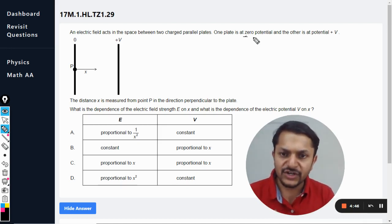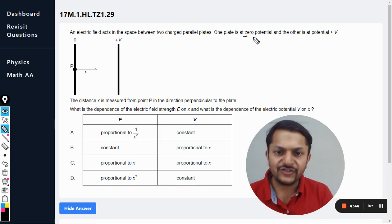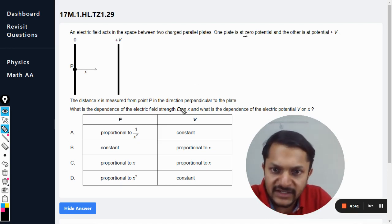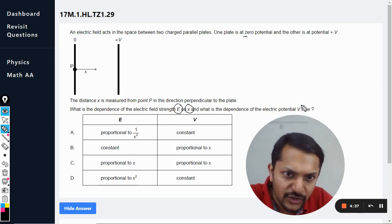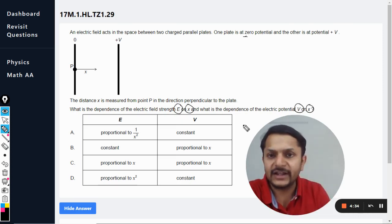The distance x is measured from point P in the direction perpendicular to the plates. What is the dependence of electric field strength E on x, and what is the dependence of electric potential V on x? So we need to find this.